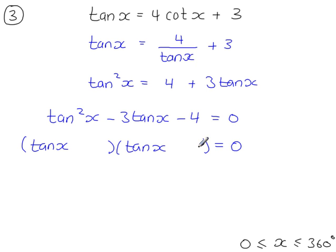Which will factorise like this. Tan x times tan x will give you tan squared x. So now we just need to work out what goes here and here. And that will be minus 4 and plus 1.